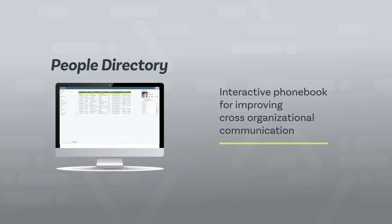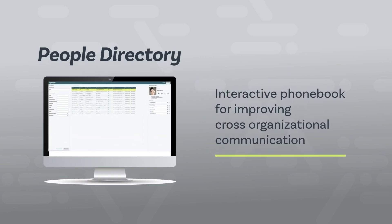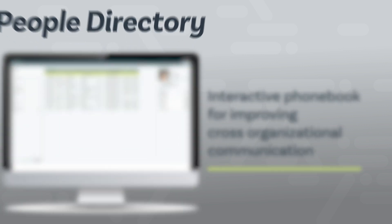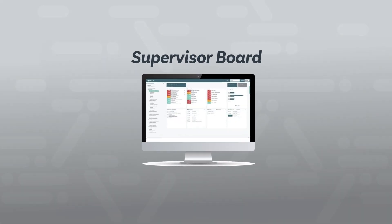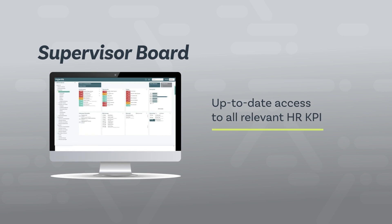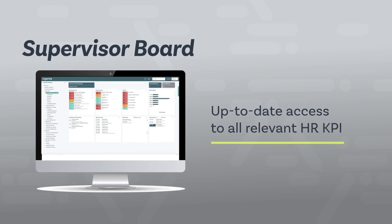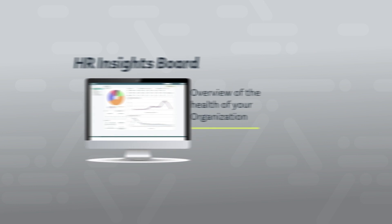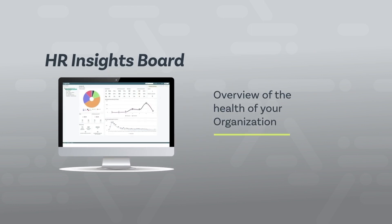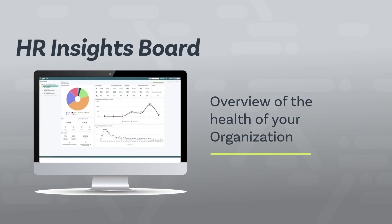The People Directory extension is an interactive phonebook aimed at improving cross-organizational communication. Supervisor Board provides executives with up-to-date access to all relevant HR KPIs. With the HR Insights Board, you keep an eye on your organization's health.